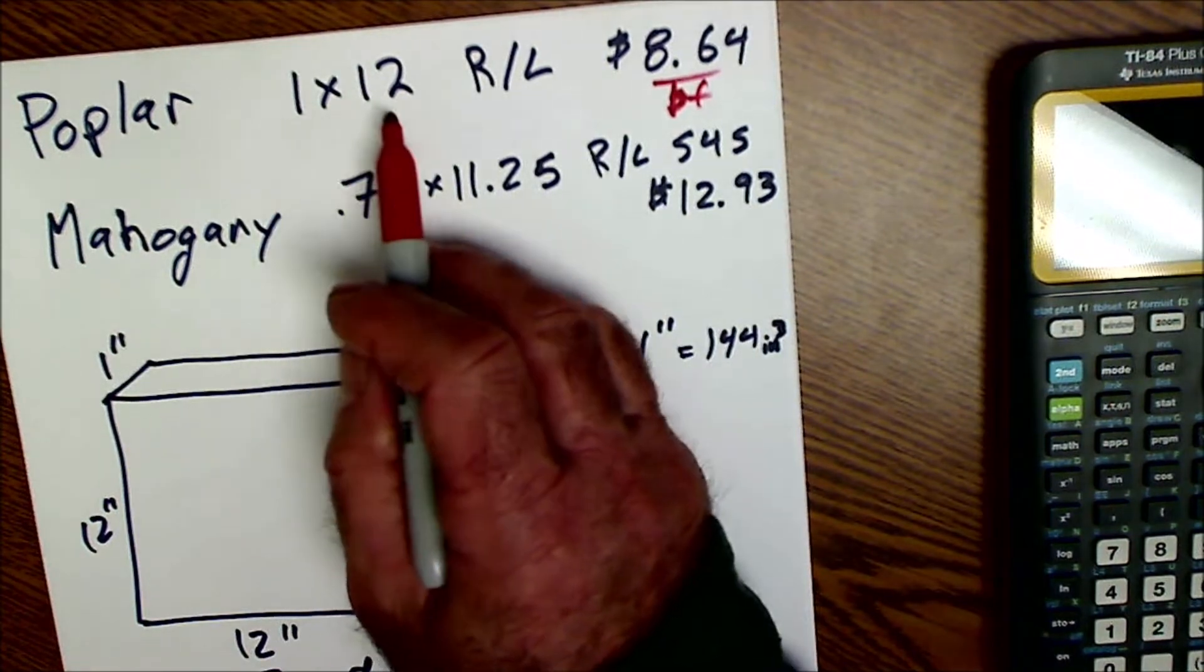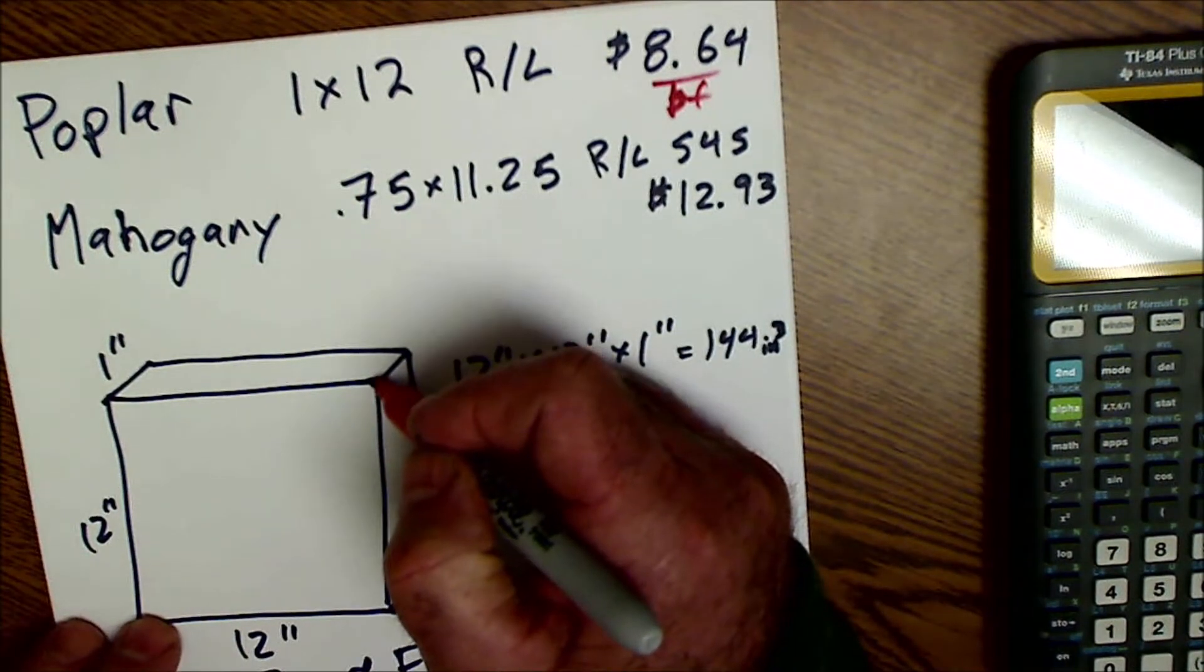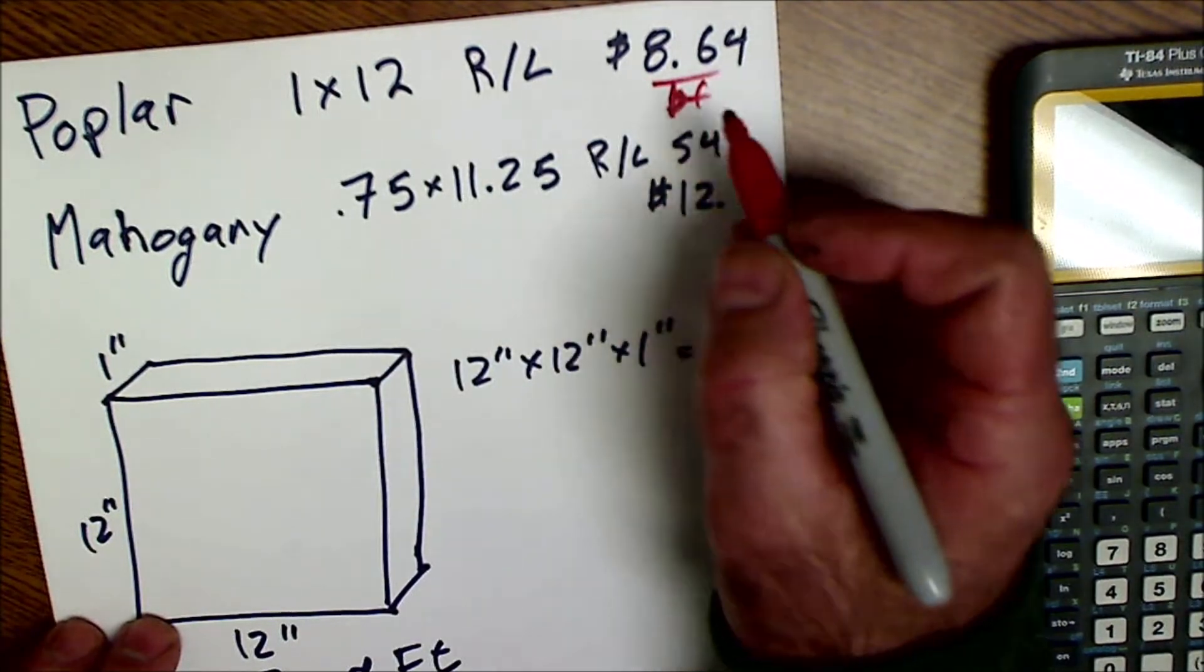This poplar, because it's 1x12 by 1 foot long, 12 inches, it's going to be $8.64 per linear foot, but also per board foot.